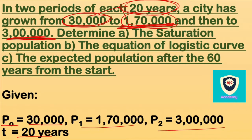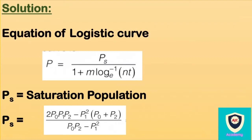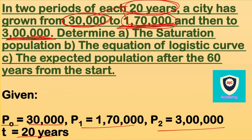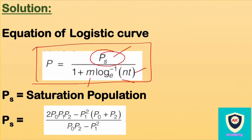Now we will see the saturation population using the logistic curve equation. The logistic curve equation is: p equals ps divided by 1 plus m into e to the power of minus n times t. First we need to know the ps value, m value, n value, and t. The ps value represents the saturation population.